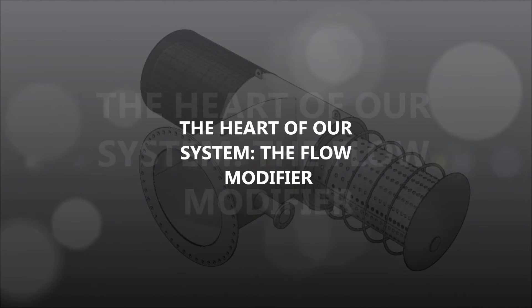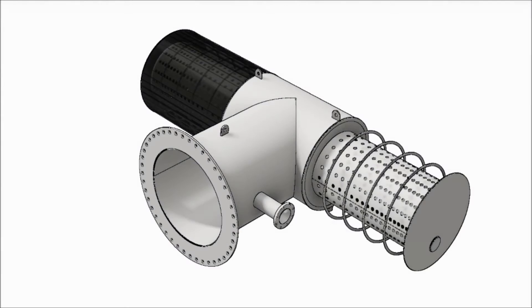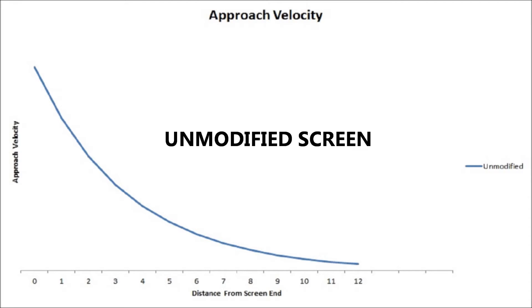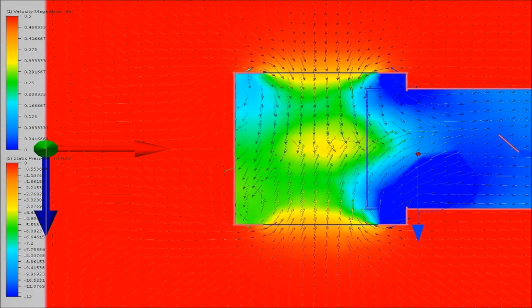The heart of our system is the Cook Legacy Flow Modifier. An unmodified screen may have peak local velocities ten times faster than the average. All flow goes through one small area, while most of the screen goes unused.